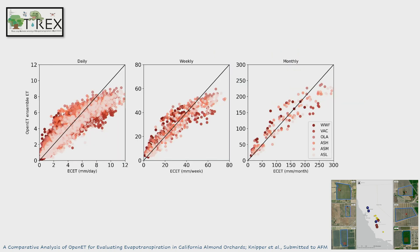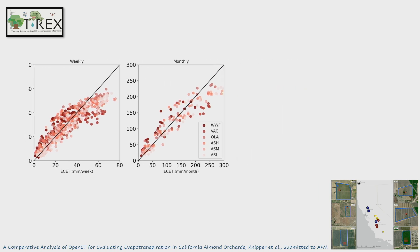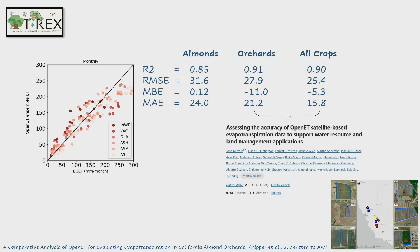When we scale up from daily to weekly to monthly, statistics improve, which is probably due to time averaging. Weekly is more appropriate from an irrigation management standpoint. Comparing to Dr. John Falk's recent paper, we find our statistics are actually slightly worse than the values reported for orchards in his paper, as well as for all crops combined, which included both perennials and non-perennials.